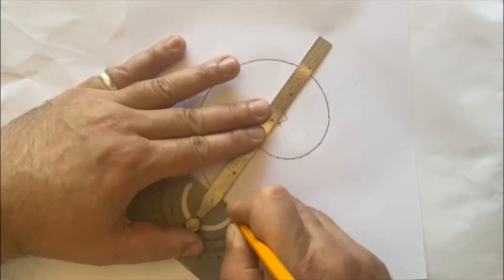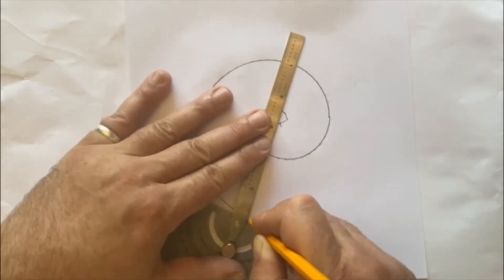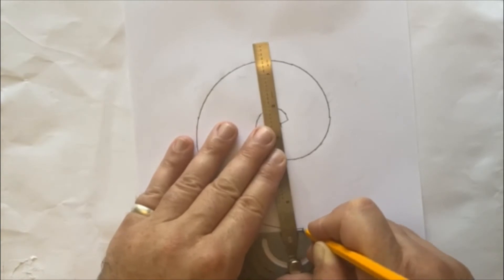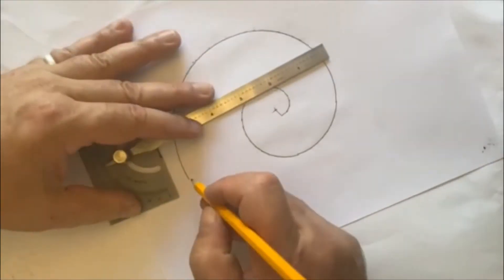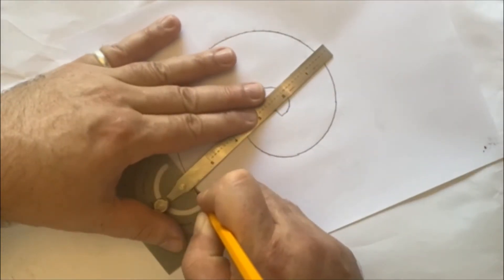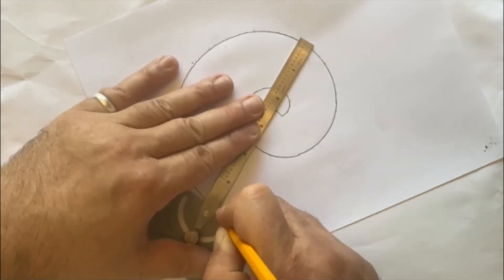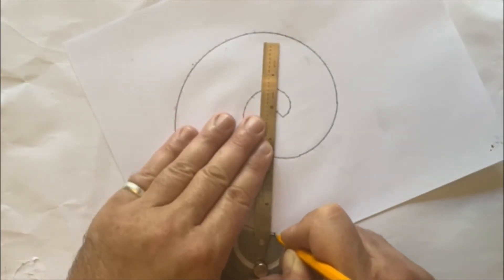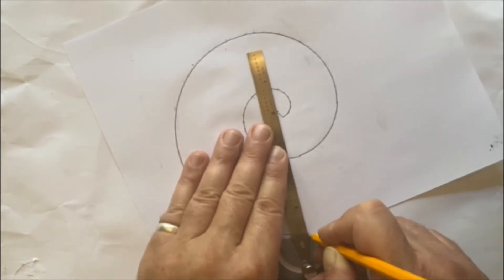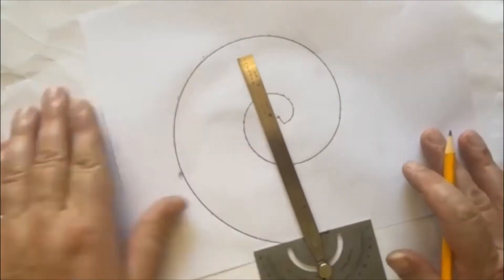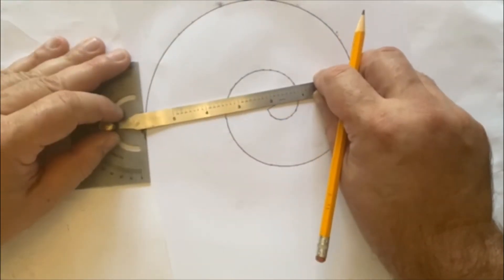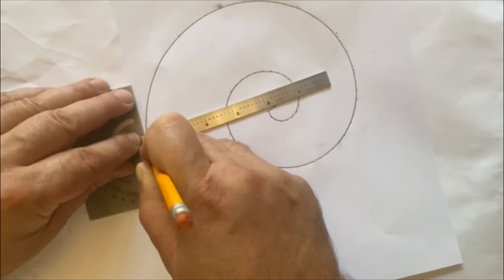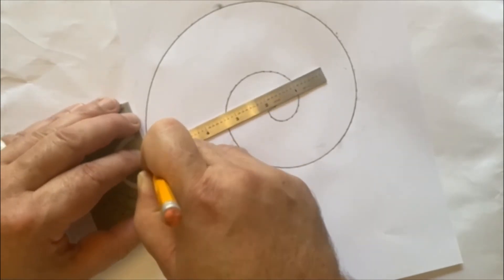And the angle that you've set on your protractor is going to change how tight or open the spiral is. This, as I said, is 5 degrees. The classic Fibonacci spiral, which is based on the sequence of squares from the Fibonacci sequence, I believe is about a 17 degree angle. So if that's what you're aiming for, go for it.